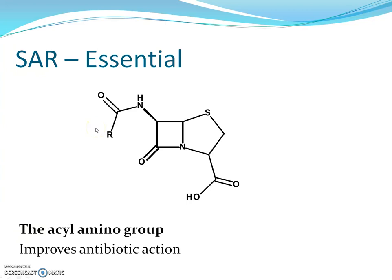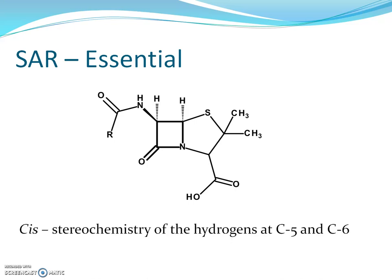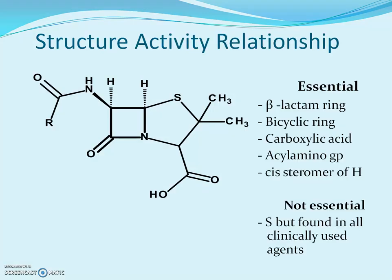The acyl amino group is again very important for activity — it improves the antibiotic action. The methyl groups are present; there is no conclusive evidence of exactly what they do, but they are also said to be important for activity. The cis stereochemistry of the hydrogens at C5 and C6 is also essential for action. So when we say 'essential,' that means everything except R is essential — R is the variable.